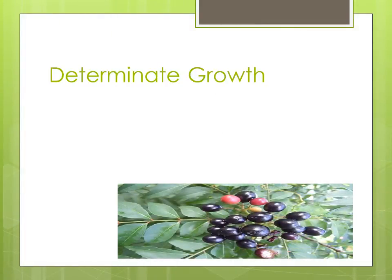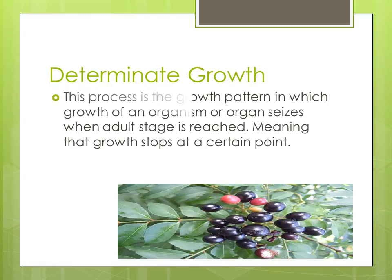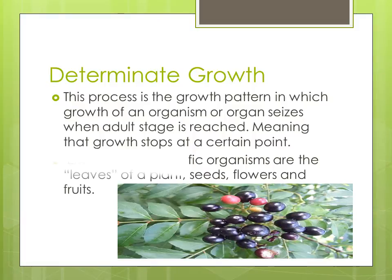Determinate growth is the first concept we're going to talk about today. To understand its general meaning, we need to understand its definition. This process is the growth pattern in which growth of an organism or organ ceases when an adult stage is reached, meaning that growth stops at a certain point. This specific growth pattern is found in leaves of a plant, seeds, flowers, and fruits.